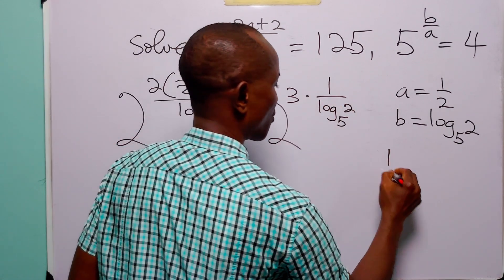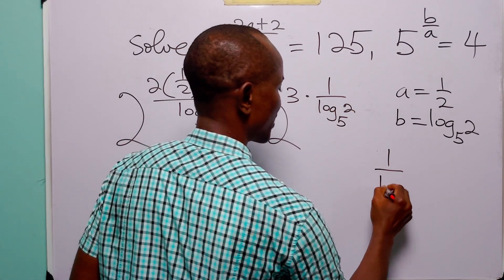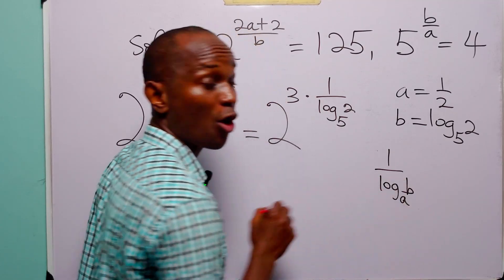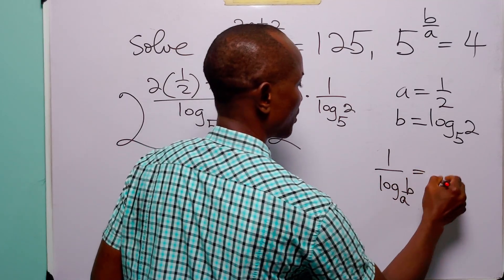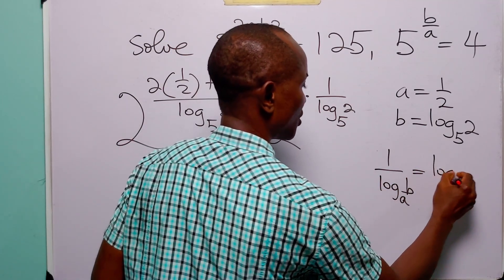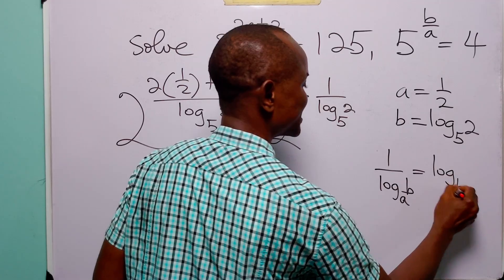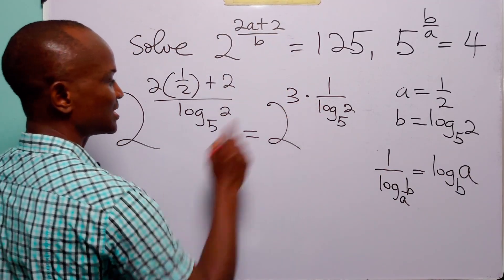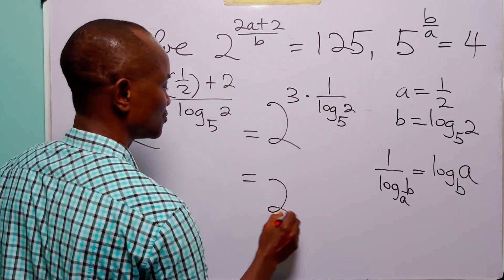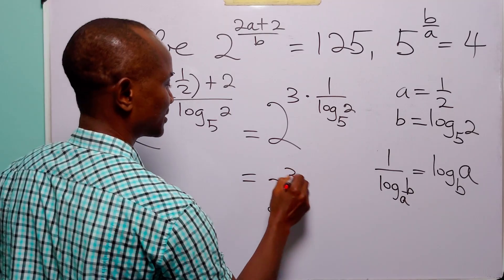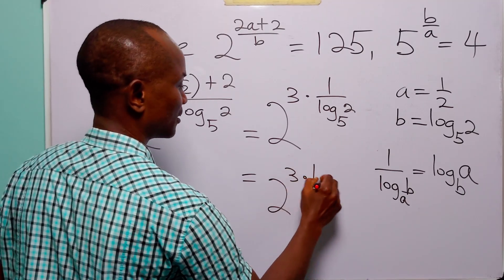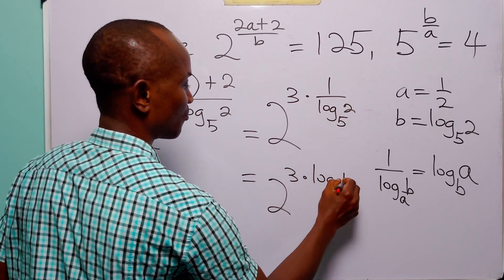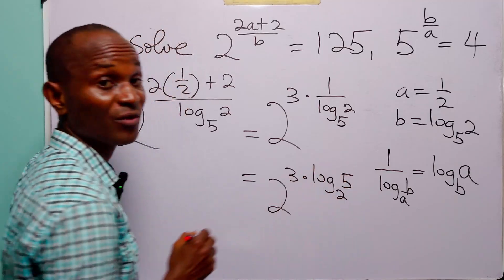Remember that 1 over log base A of B is equal to log base B of A. So this is equal to 2 to the power (3 times log base 2 of 5).